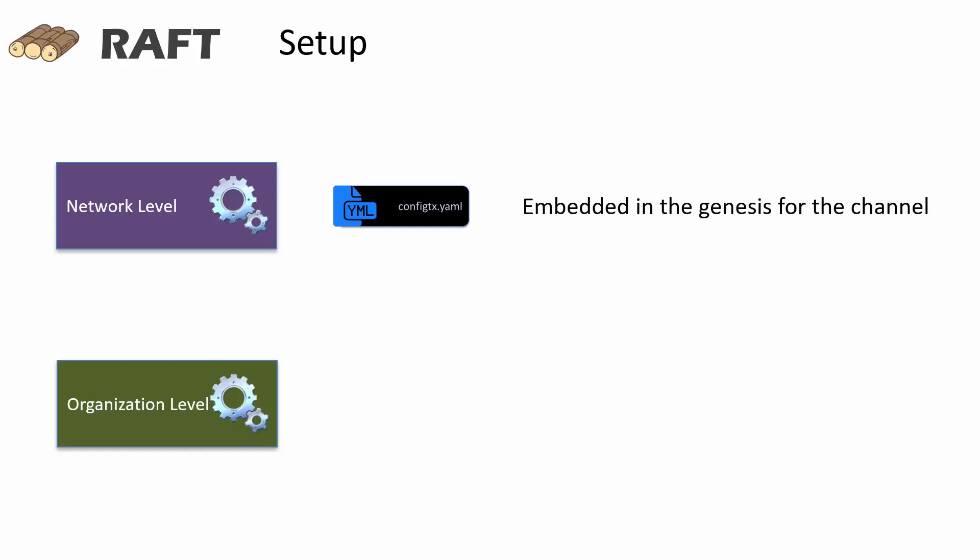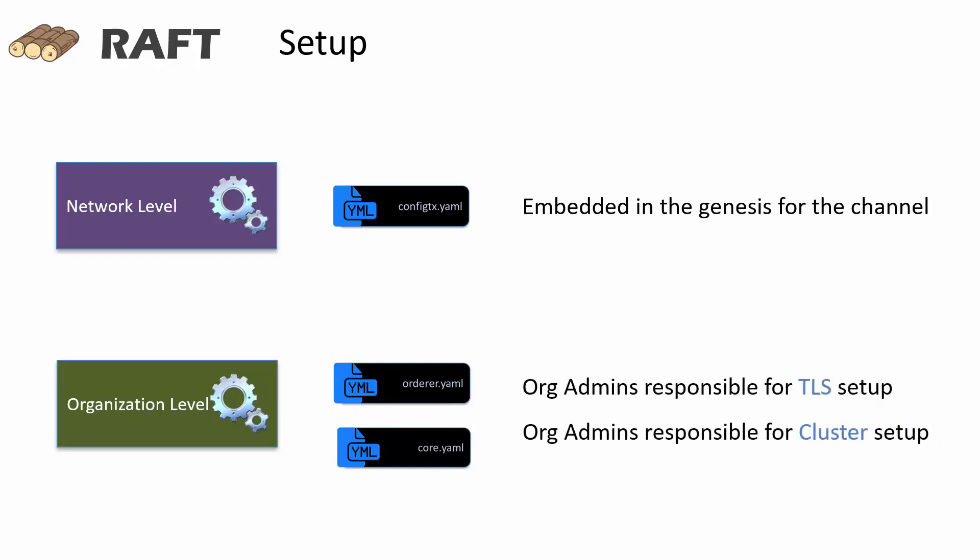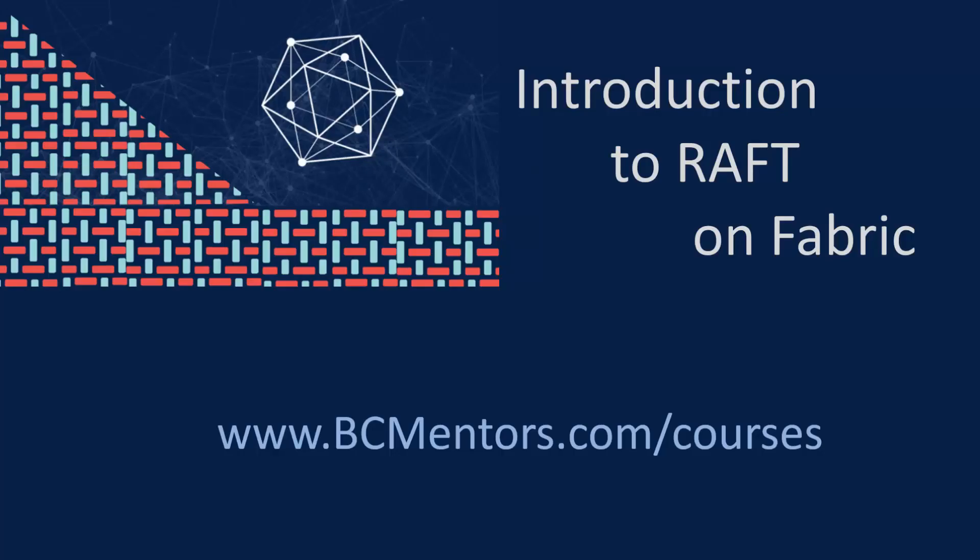At the organization level, the org administrators have to make updates to the core.yml and orderer.yml. They need to enable the TLS for peer instances and the orderer instances. And in the orderer.yml file, they need to define the parameters under the cluster section. Thank you for watching this video. I hope you found it useful. For more information on my Hyperledger Fabric courses, please visit my website bcmentors.com slash courses.